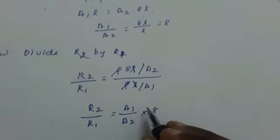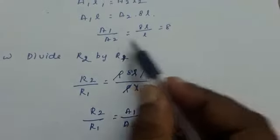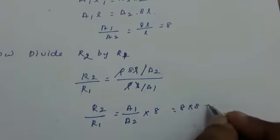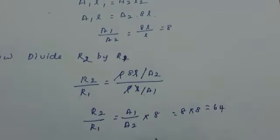Now, you know what is A1 by A2. According to the previous step A1 by A2 is equal to 8. So it is substituting here 8 into 8. That is equal to 64.